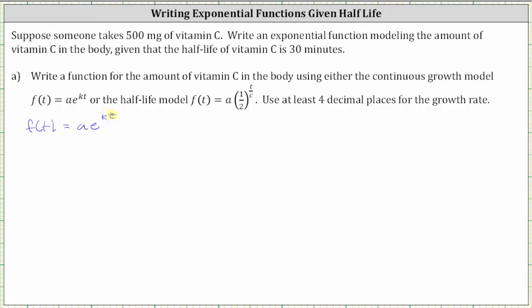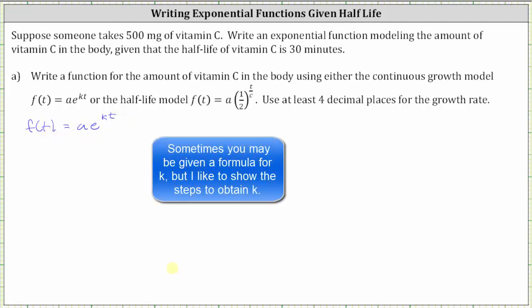Let's first find the function when the time is in minutes, and then we'll also find the function when the time is in hours. Because we know the half-life is 30 minutes, when a, the starting amount, is 500, f(t) is 250 when t is 30 minutes. This gives us the equation 250 equals 500 times e raised to the power of k times 30, or 30k.